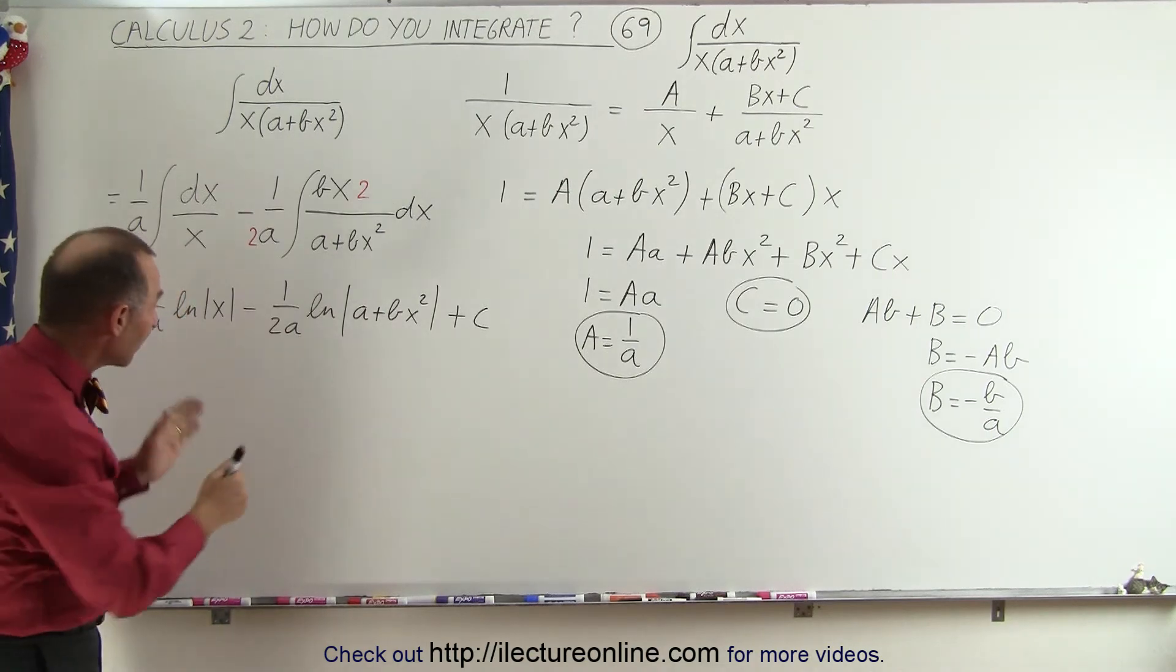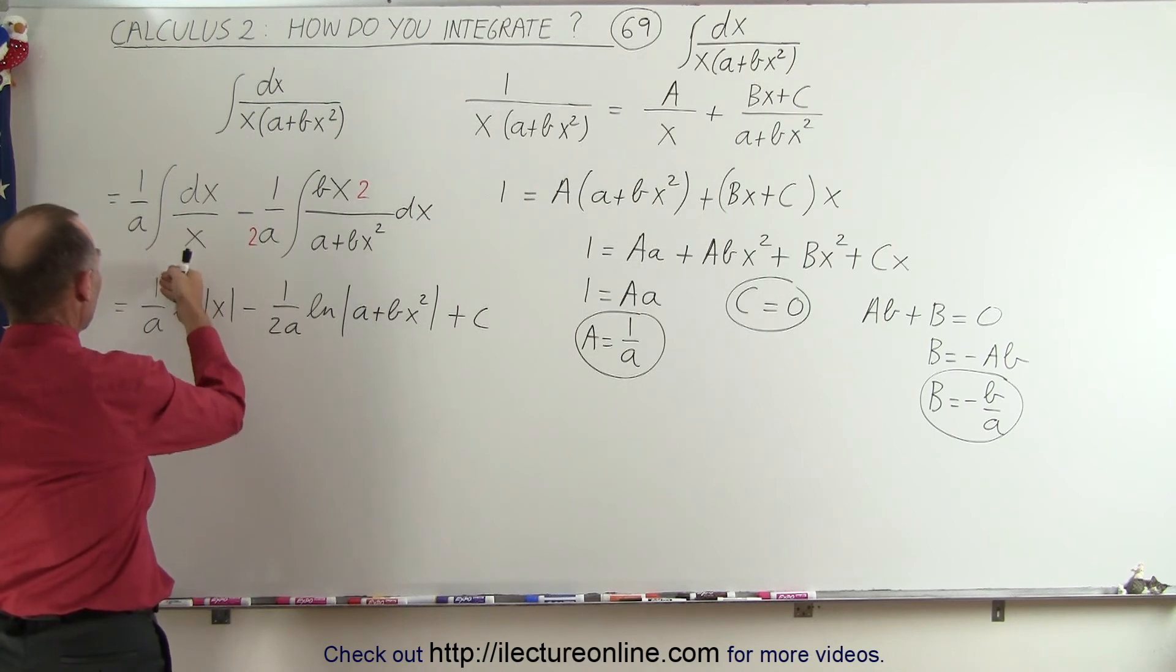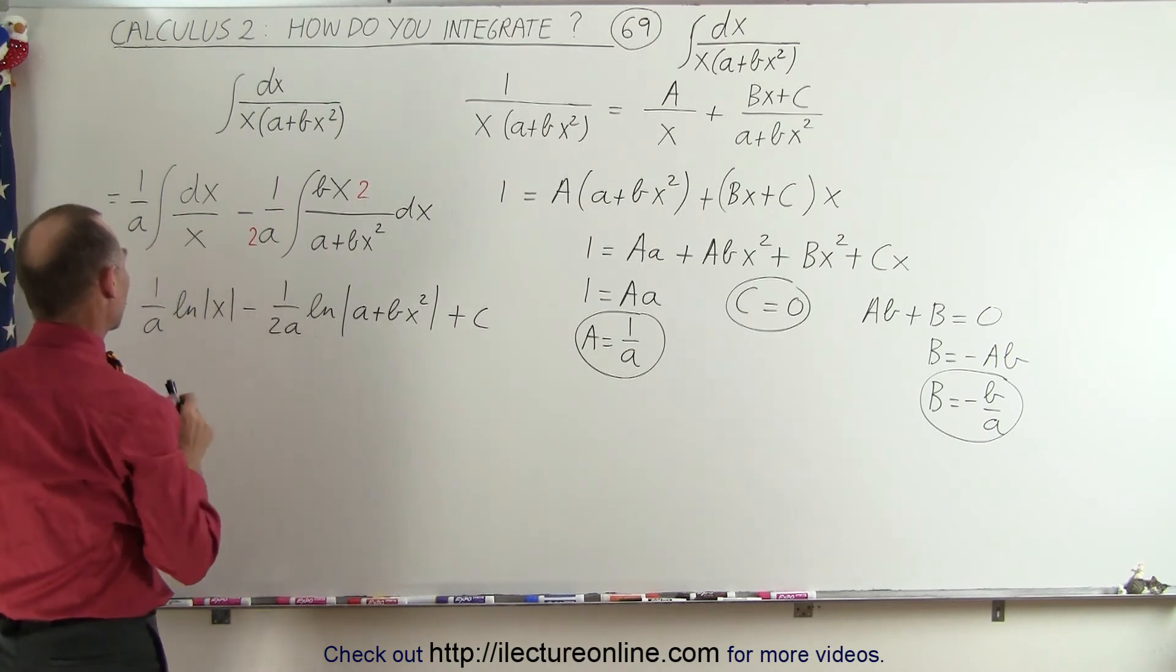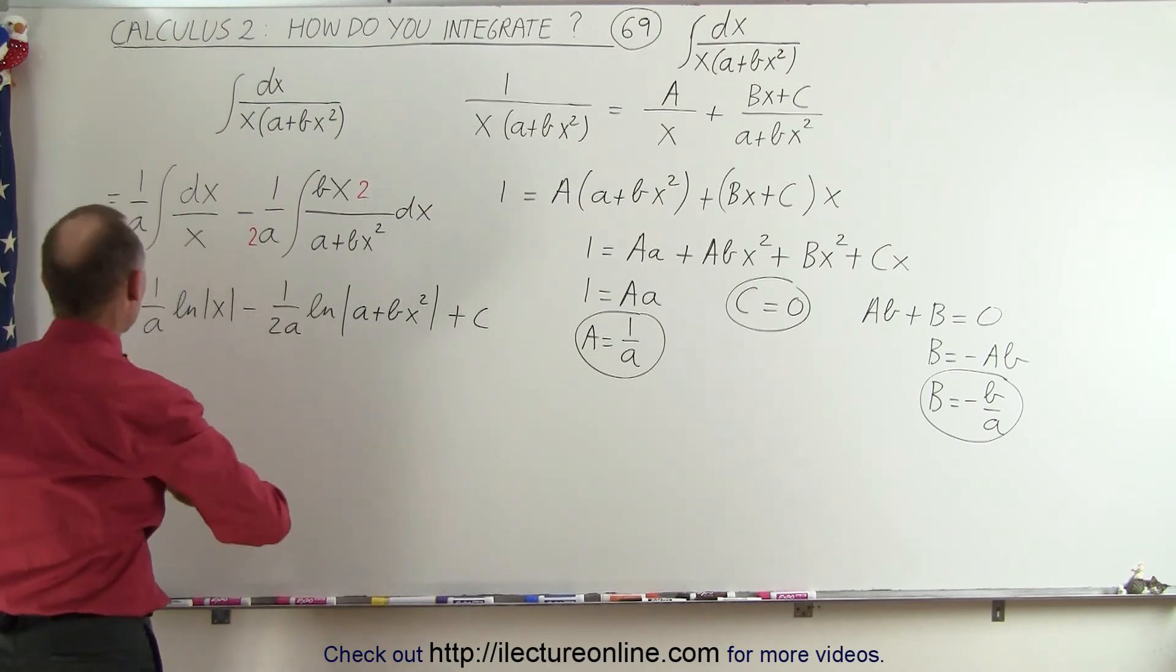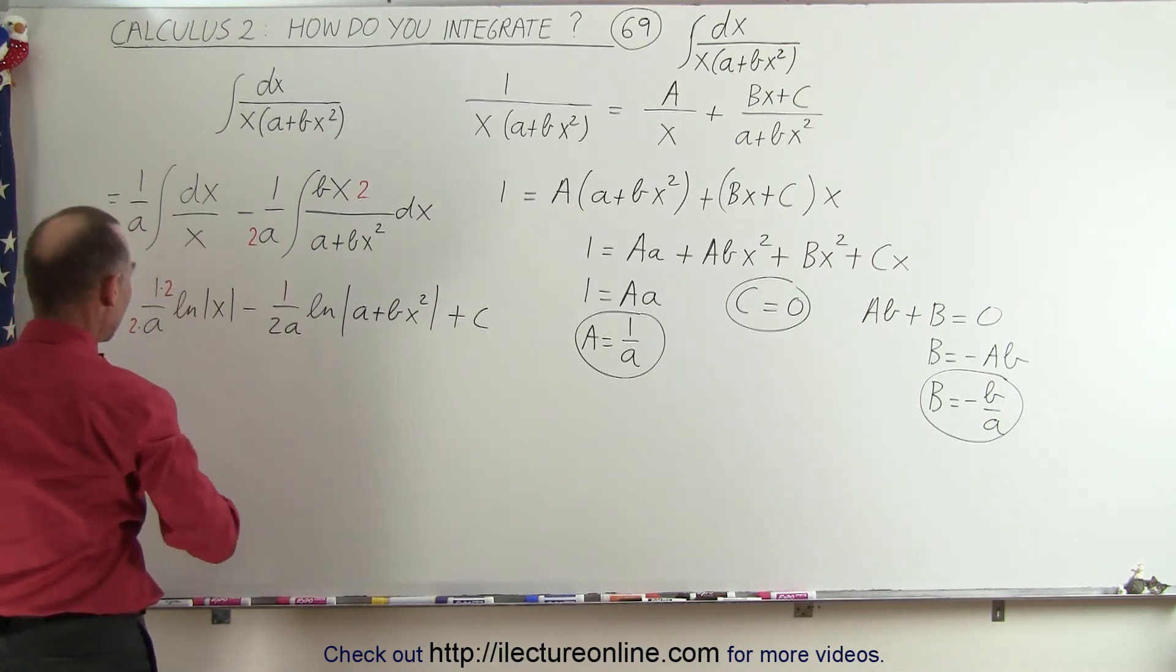Now we can probably combine these two, except here we have a 1 over 2a and there we have a 1 over a. So what I could do is I could divide and multiply this by 2, so multiply this by 2 and multiply this by 2 and take the 2 here and write it as an exponent.